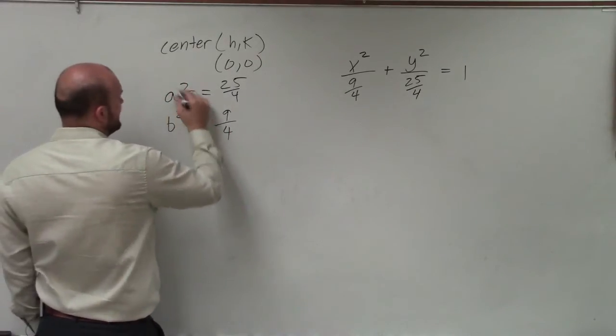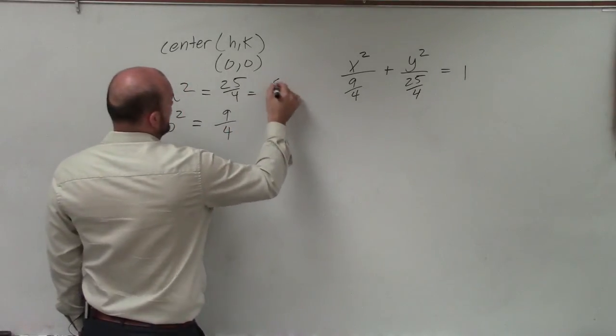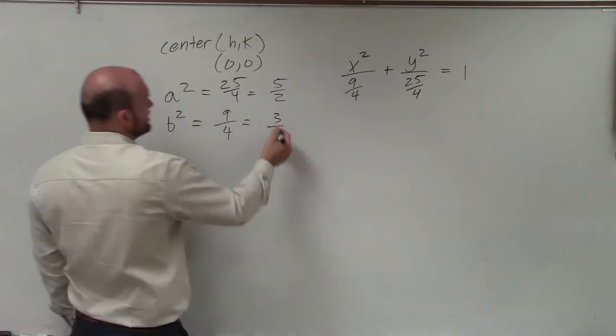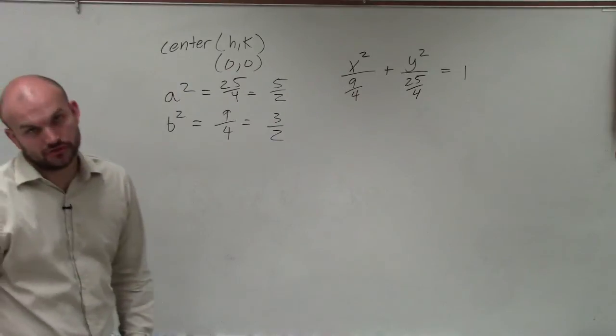Therefore, to solve for a, I'm going to take the square root of both sides, and I'd get 5 halves. And when I solve for b, I would get 3 halves, which you can obviously see, a is going to be larger than b.